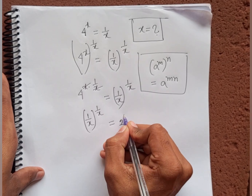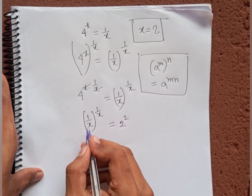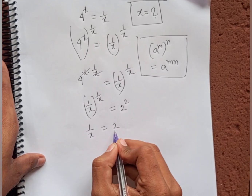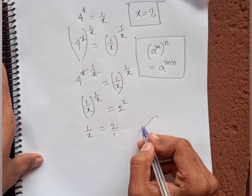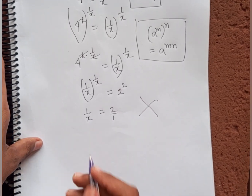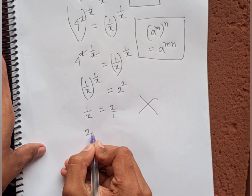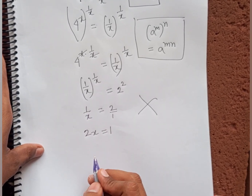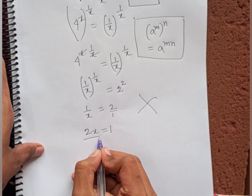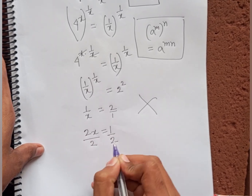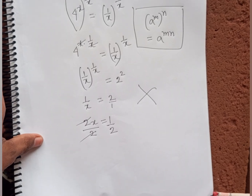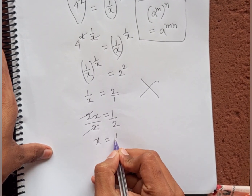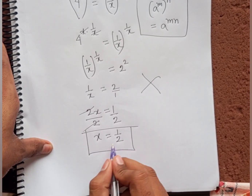From here, 1/x = 2. We can write 2 as 2/1. Applying cross multiplication: x × 2 = 1 × 1, so 2x = 1. Dividing both sides by 2, x = 1/2. So x = 1/2 is the final answer.